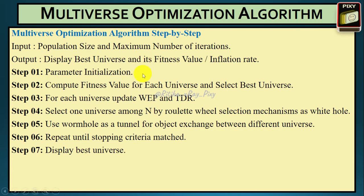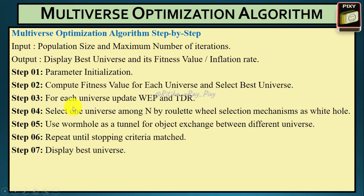To summarize: first we initialize all important parameters and the population for N search agents. Then we compute the fitness value for each and select the best — minimum value is considered best. Then we update the wormhole existence probability and traveling distance rate for each universe, select one as the white hole, use the wormhole as a tunnel for object exchange, and repeat until the stopping criteria is matched. Finally, display the best universe. All important resources are given in the description below — if you have any questions, comment below.